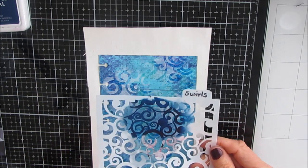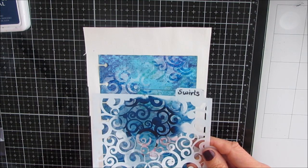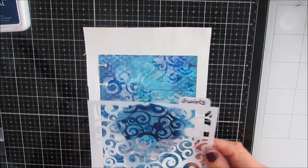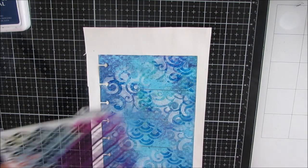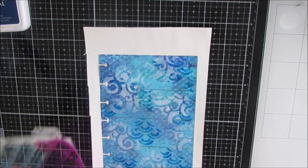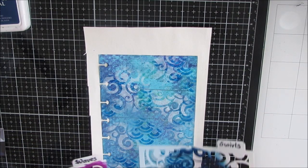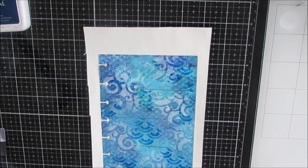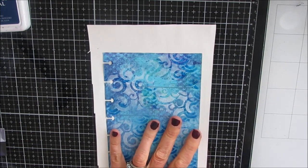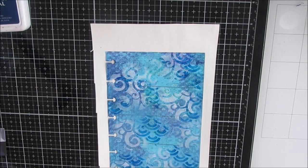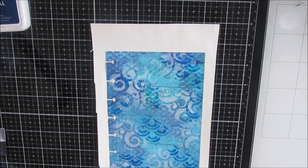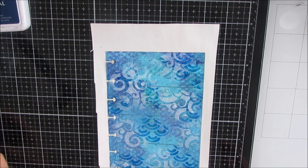I grabbed two of the cookie and cake stencils from The Crafter's Workshop—Swirls and Waves—and I've done some stenciling with white and with different blues that were also in the background of this gel print. This has been sitting there waiting for me to become inspired and to use it as a background.